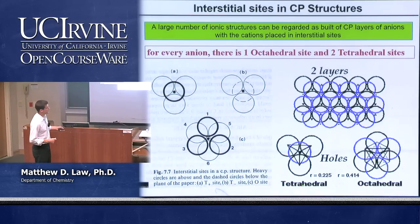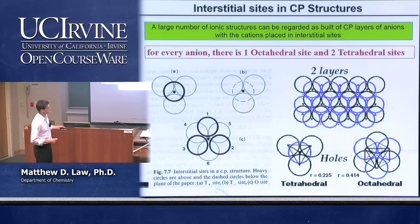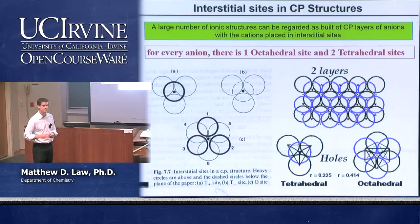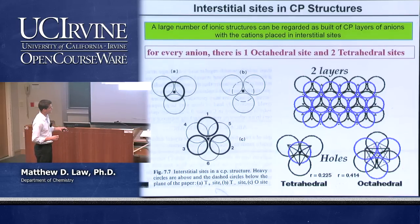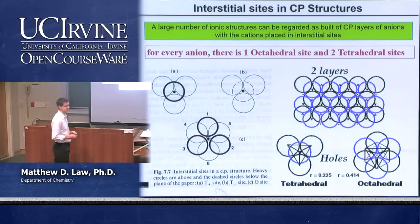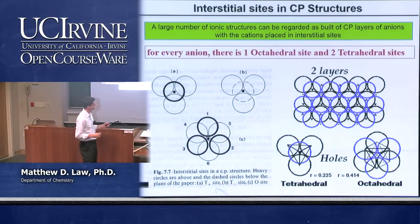The sizes of the octahedral and tetrahedral holes are important. The tetrahedral site has a radius about 22.5% that of the anion radius. The octahedral site is larger — about 41.4% of the anion radius.